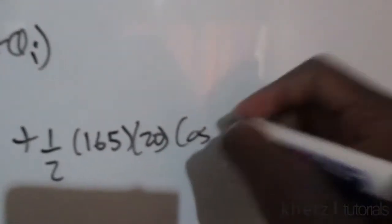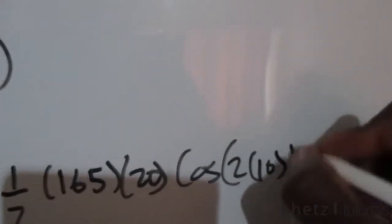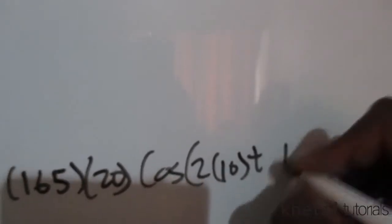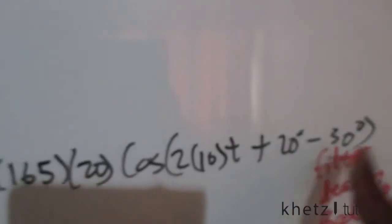Then you're going to add half the amplitude multiplied, then you're going to have cosine, then you're going to add 2 omega t and your angular frequency is 10t, then you're going to have the addition of the two angles which is 20 degrees and negative 30 degrees.